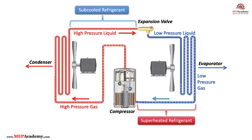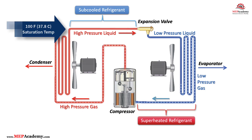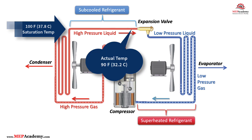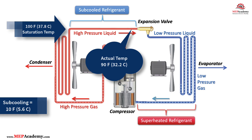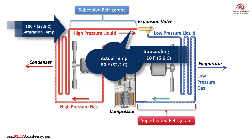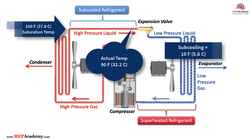As an example, if the saturation temperature is 100°F (37.8°C) and the line temp is 90°F (32.2°C), then your subcooling is 10°F (5.6°C).